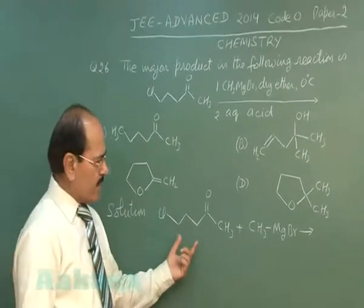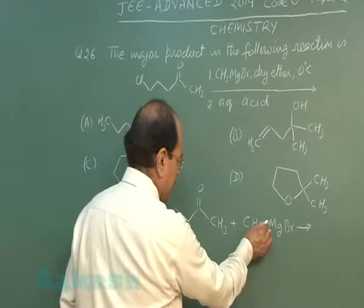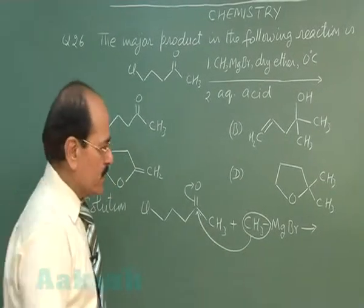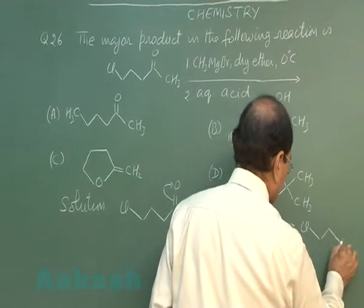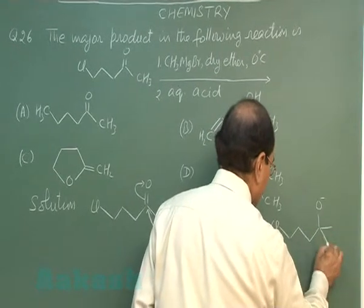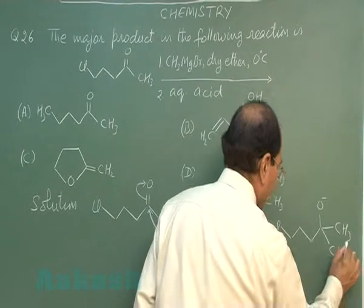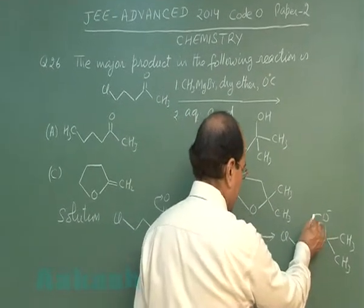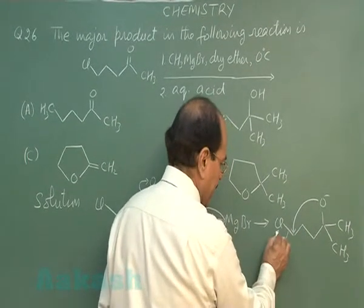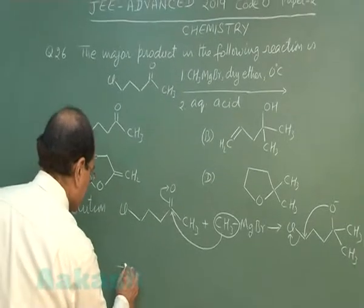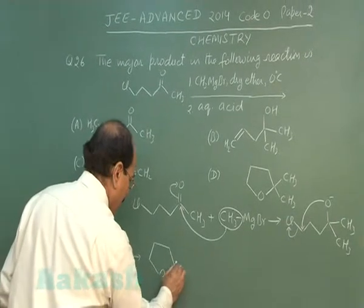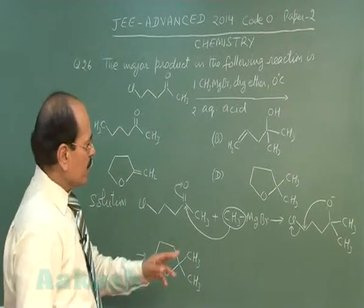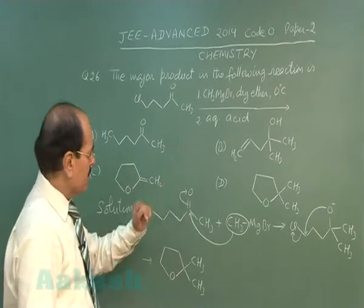When the given reactant is treated with methyl magnesium bromide, the methyl part of the Grignard reagent attacks at the carbonyl carbon, and pi electrons move to oxygen. This is followed by intramolecular nucleophilic substitution: the O⁻ attacks at the carbon containing the halogen, and the halide leaves. The product formed by the reaction is option D, which is correct.